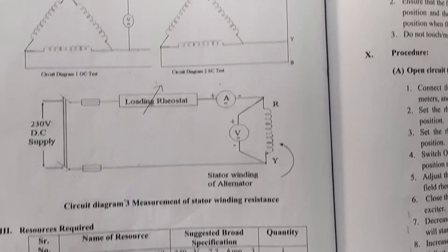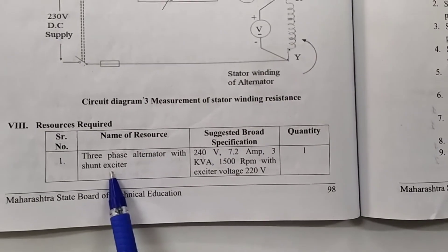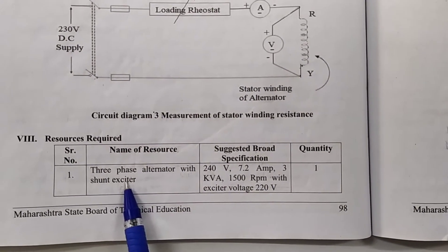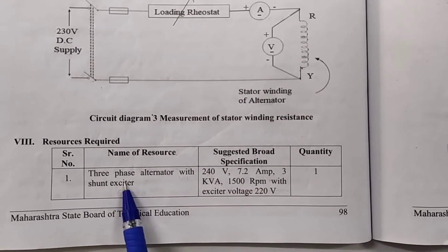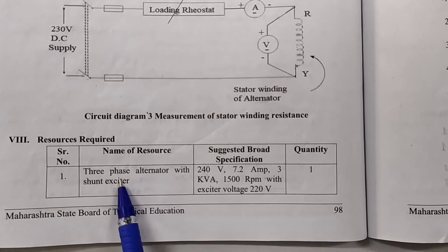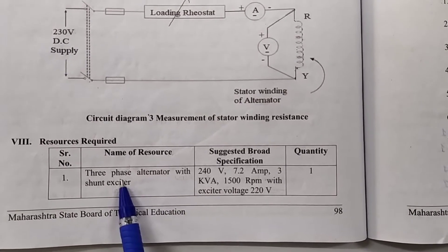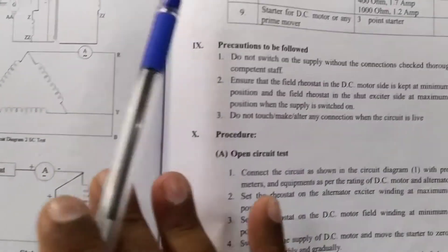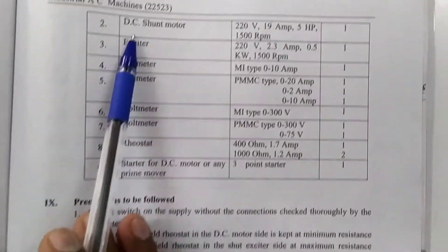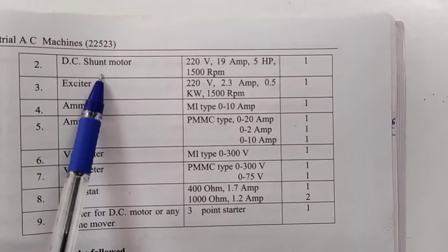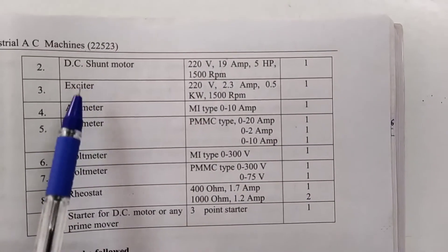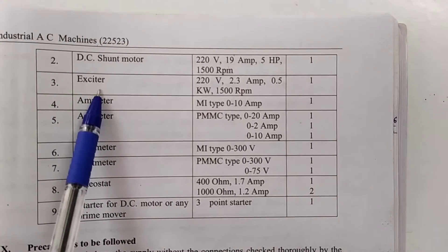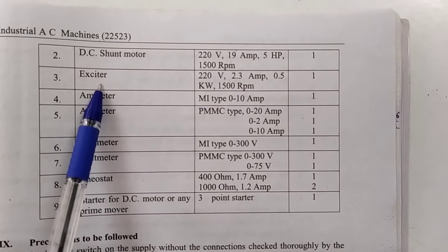The resources required include a 3-phase alternator with a shunt exciter — here we provide a separate rectifier for exciting. A DC shunt motor acts as the prime mover for the alternator. Instead of a built-in excitation, we are using a rectifier unit.